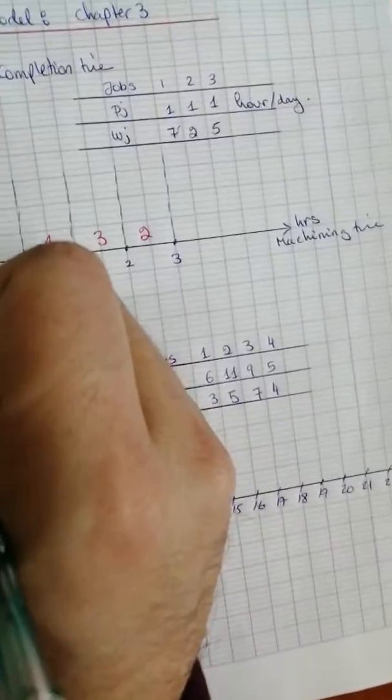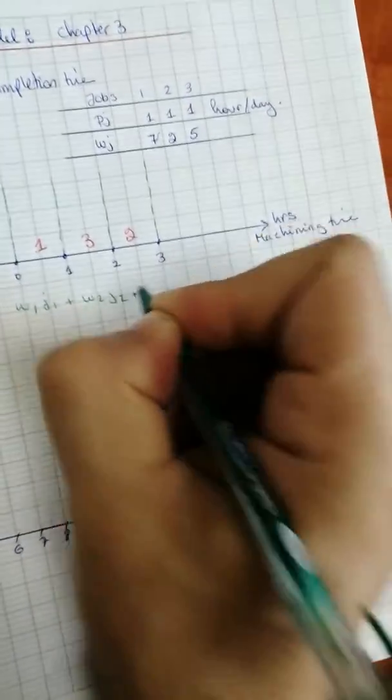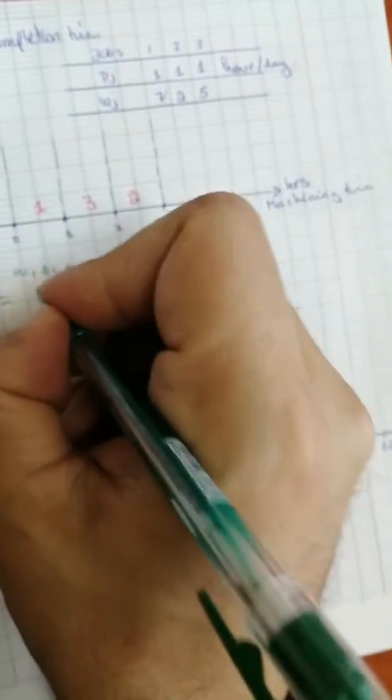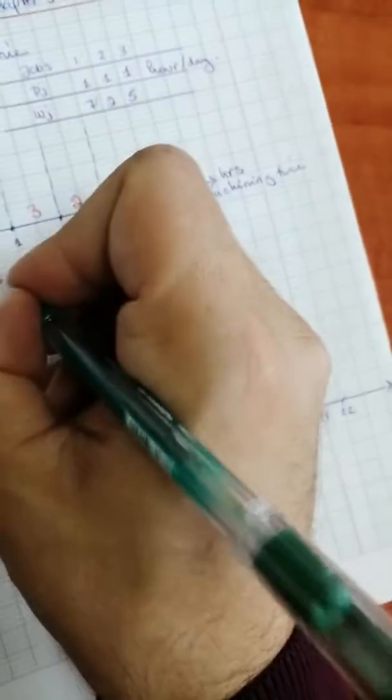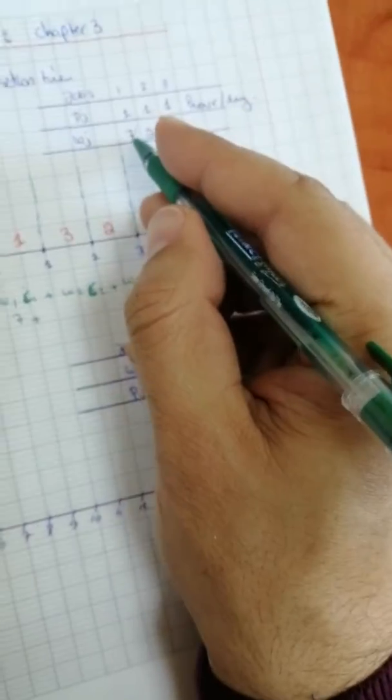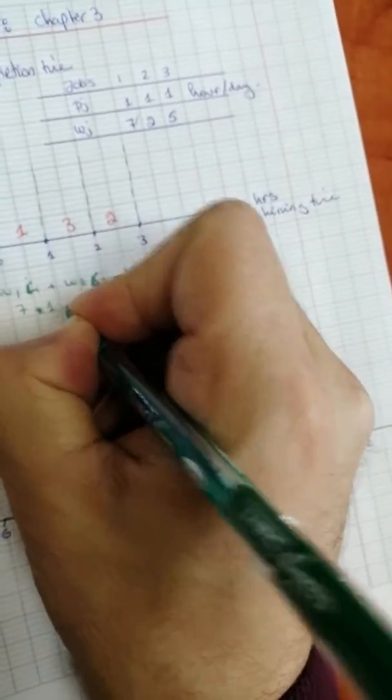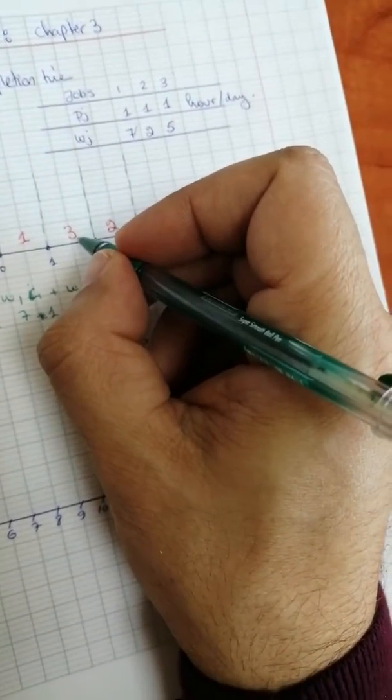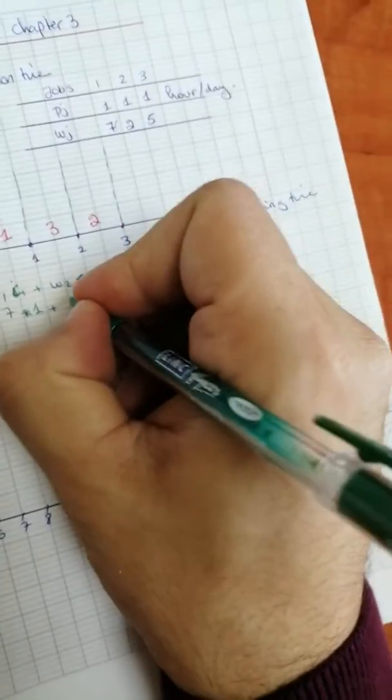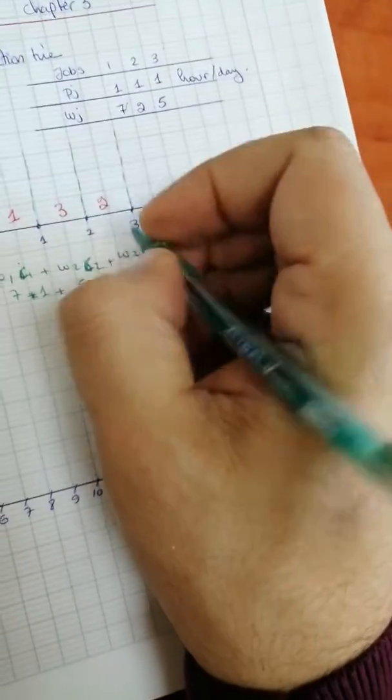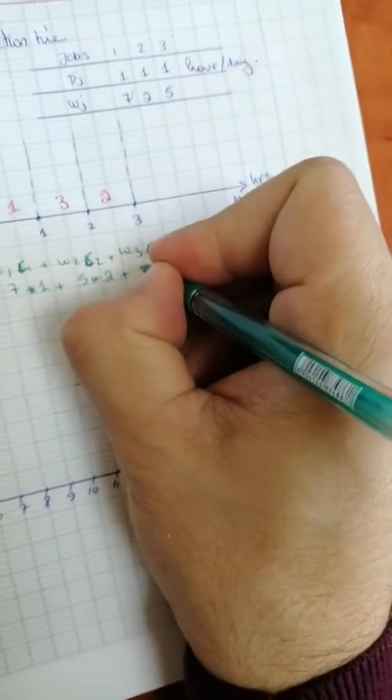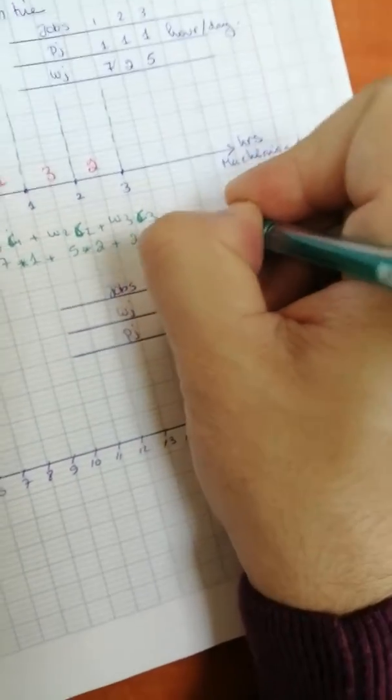To calculate summation of wj*cj, it equals w1*c1 plus w2*c2 plus w3*c3. For job 1, w1 is 7 and it finished at c1 after one hour of machining, so this is 7 times 1. For job 3, it's 5 times 2 - it finished after two hours of machining.